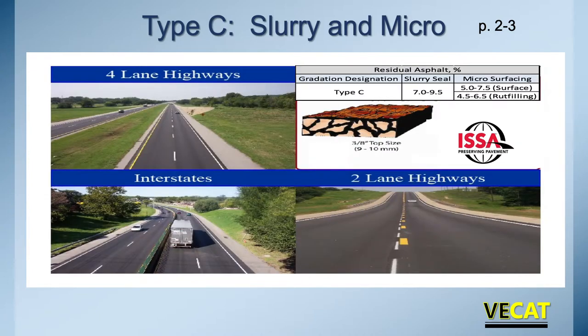Type C is the coarsest material, mainly used on four-lane highways, interstates, and high-trafficked two-lane roads. When used in a slurry system it can only go down one rock deep, but in a micro system you can stack it, which makes it ideal for rut filling. You can only use a Type C material for rut filling — not a B, not an A.